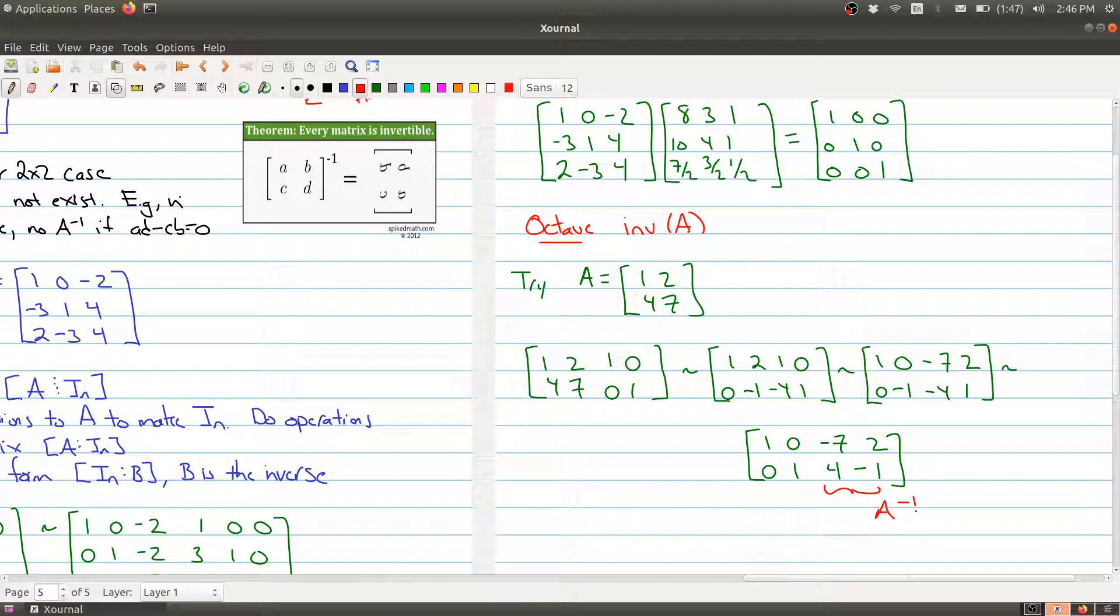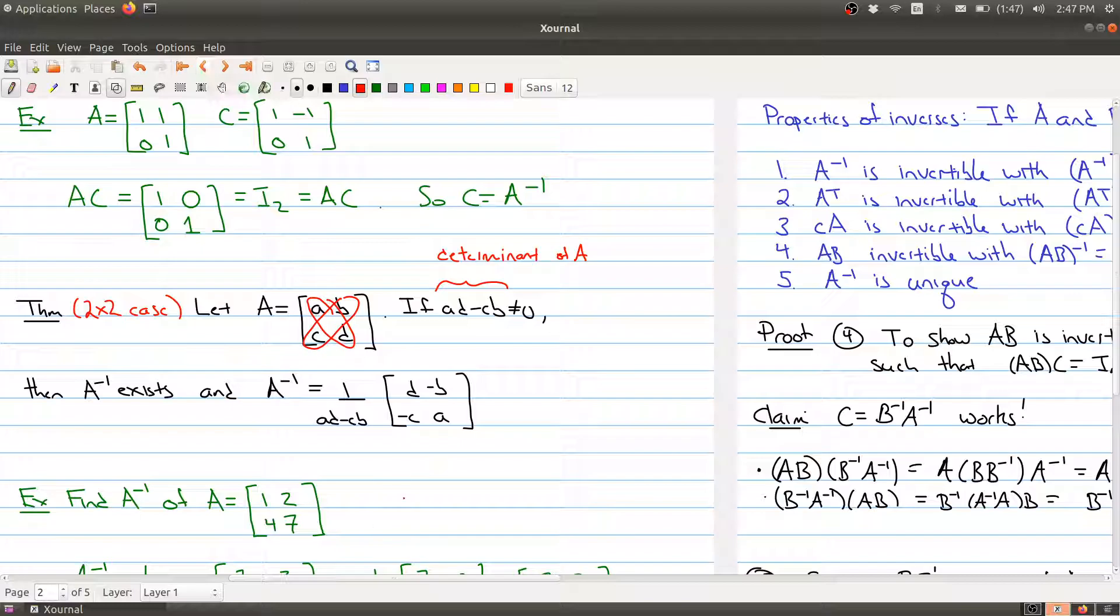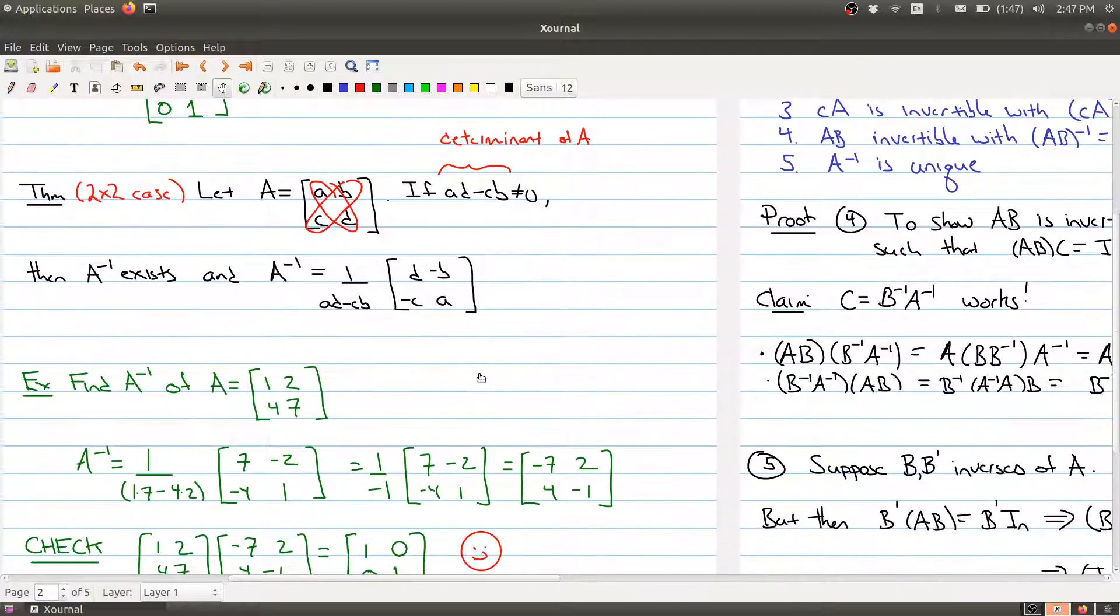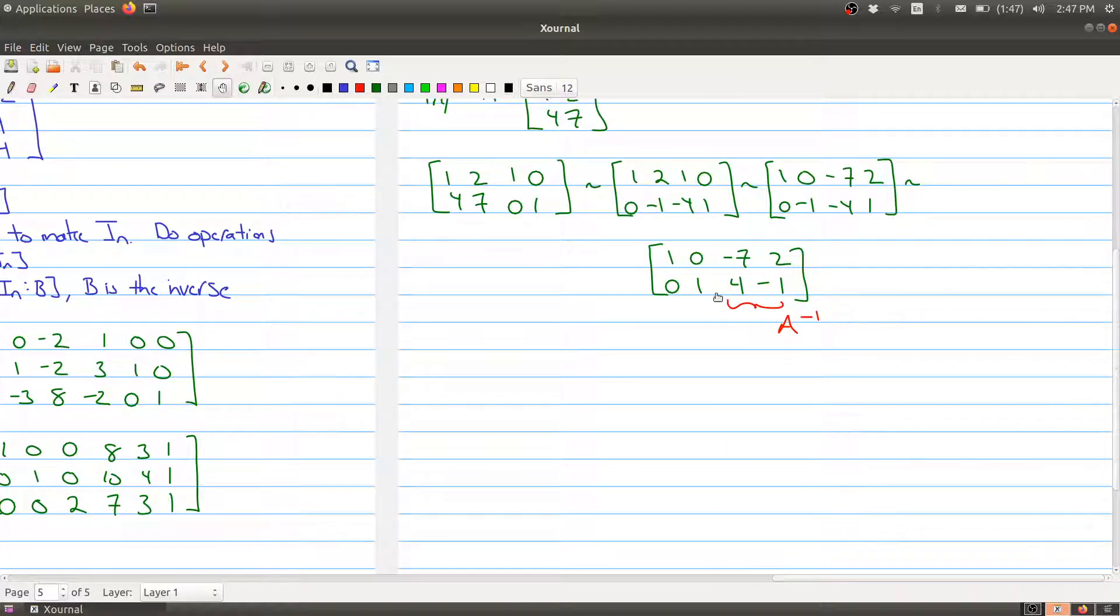So we have our formula, we also have our procedure. And let's just go back a page or two and double check that we actually have the same answer as before. We had -7, 2, 4, -1. So let's go to the end. And there we go. That's the exact same answer as before.